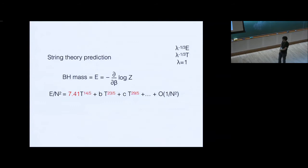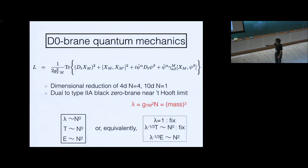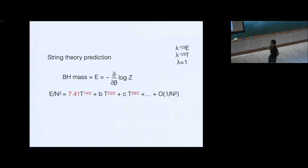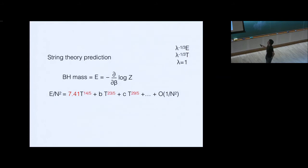If we take the 't Hooft limit by scaling lambda and T appropriately, the energy of the matrix model should be identified with the black hole mass according to the duality dictionary. We can calculate both those quantities on the gravity side and the matrix model side. For simplicity, by temperature or energy I actually mean the dimensionless combination, secretly setting lambda equals to 1. Because the coupling constant has non-trivial mass dimension, simple dimensional counting doesn't work.